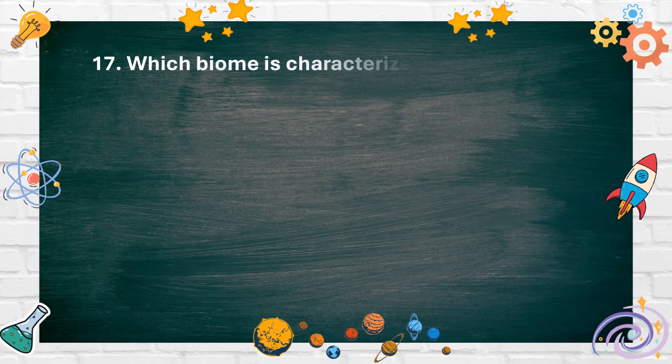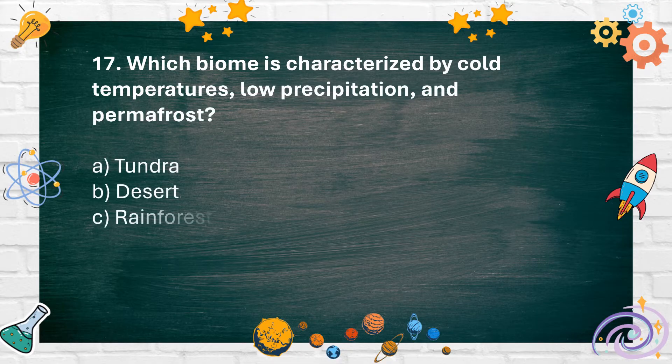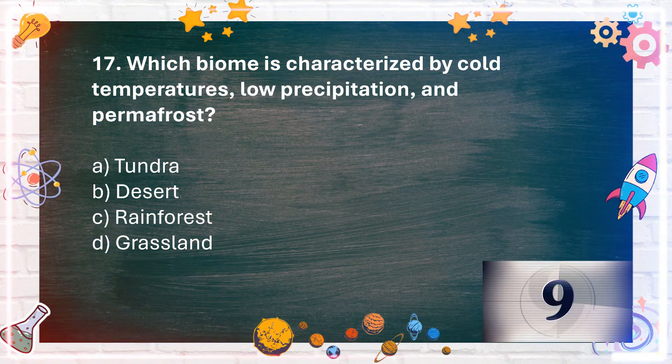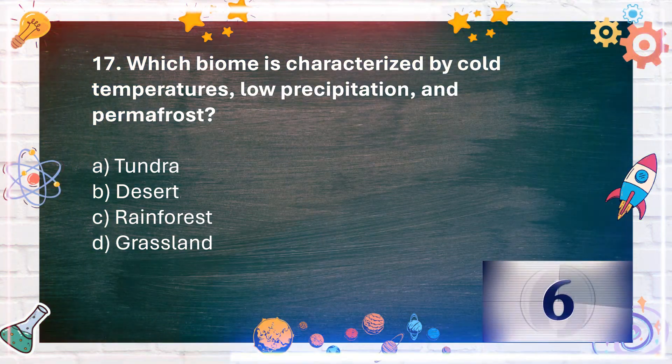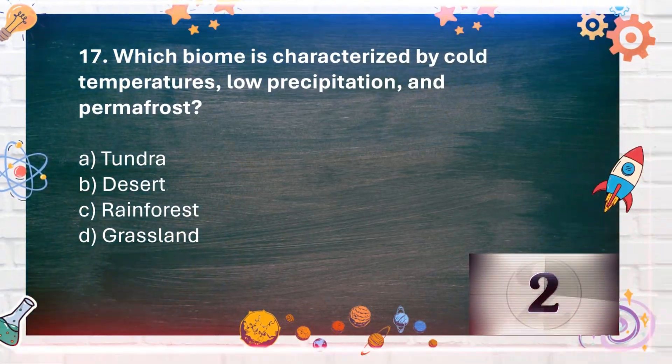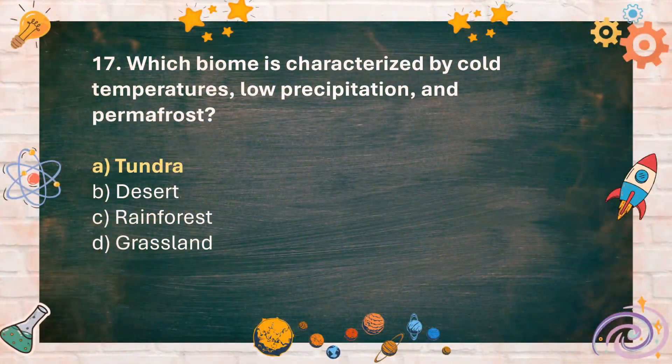Number 17: Which biome is characterized by cold temperatures, low precipitation, and permafrost? A. Tundra, B. Desert, C. Rainforest, D. Grassland. The answer is A. Tundra.